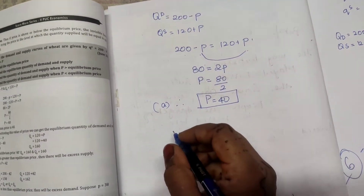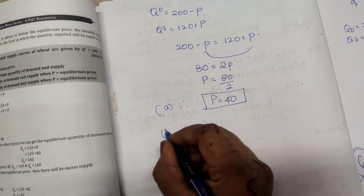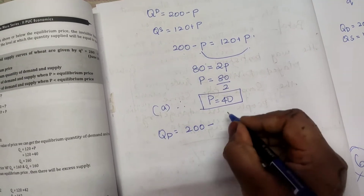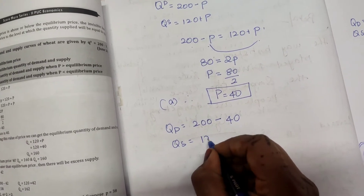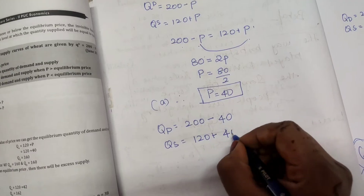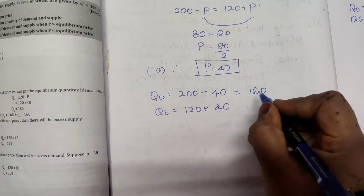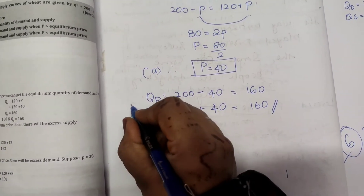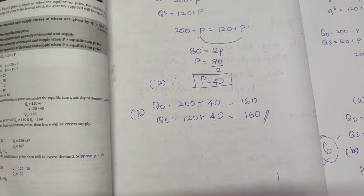Now we will calculate the equilibrium quantity. Quantity demanded equals 200 minus P, so with P equals 40, we get 200 minus 40 equals 160. Quantity supplied equals 120 plus P, so 120 plus 40 equals 160. Hence we have found out that equilibrium quantity demanded and supplied is 160.